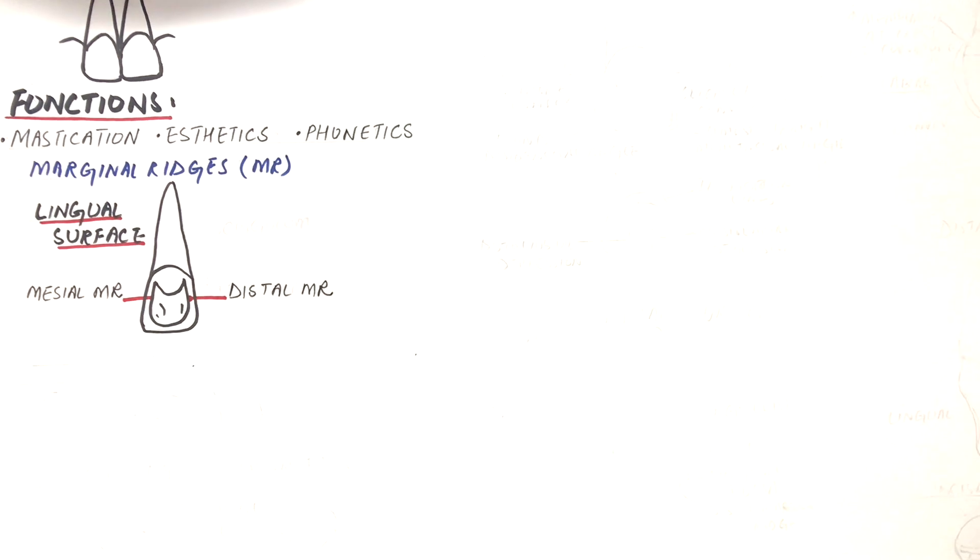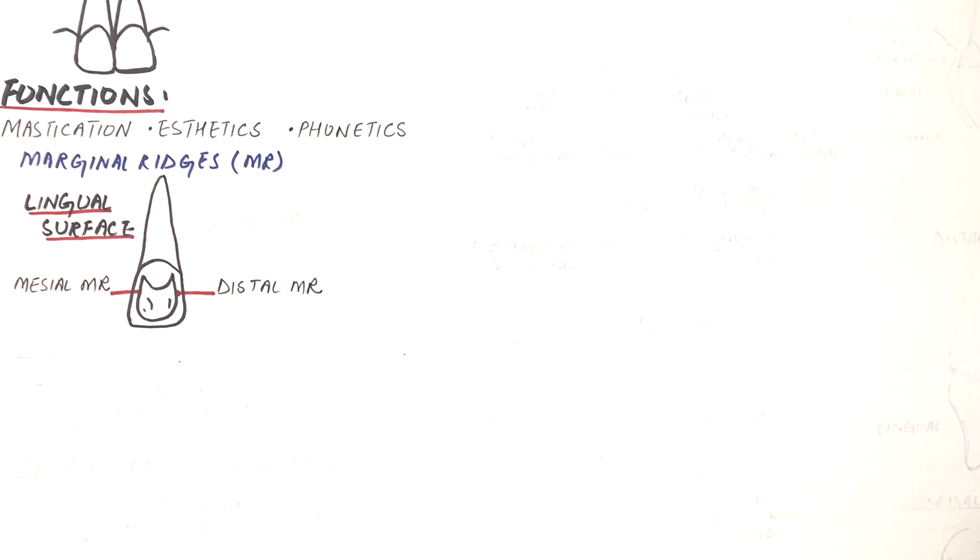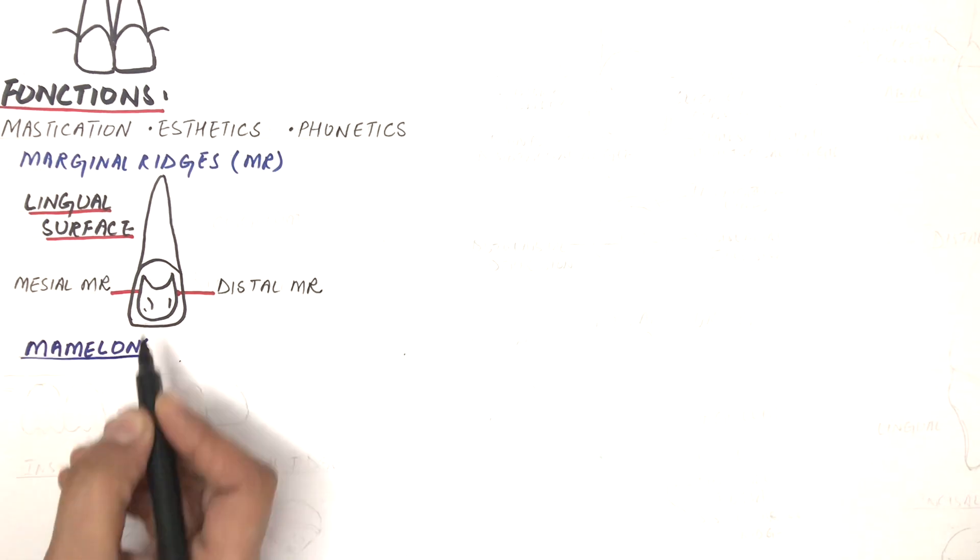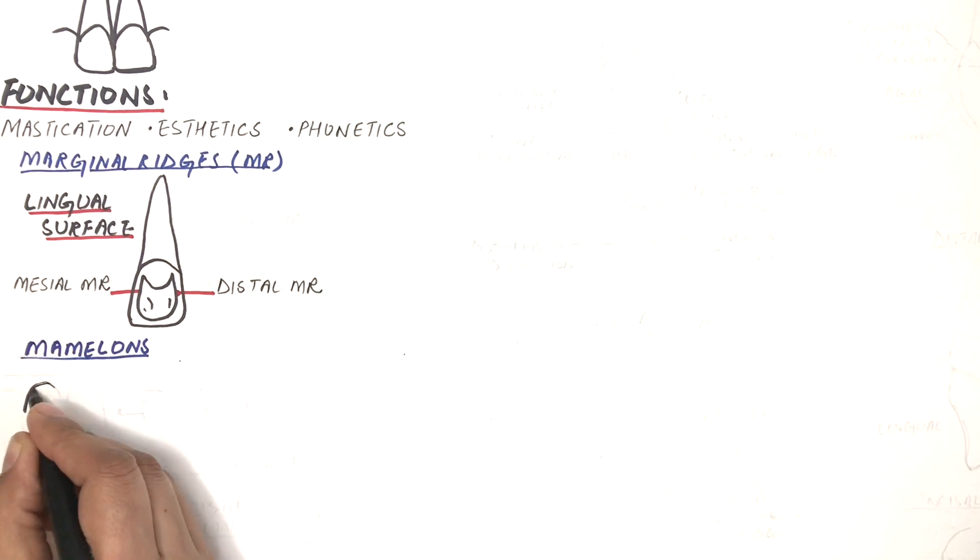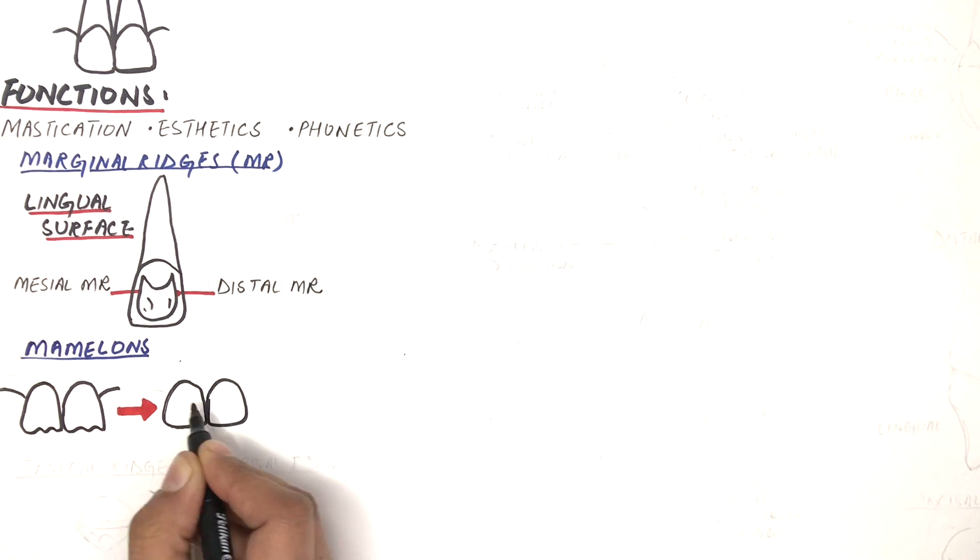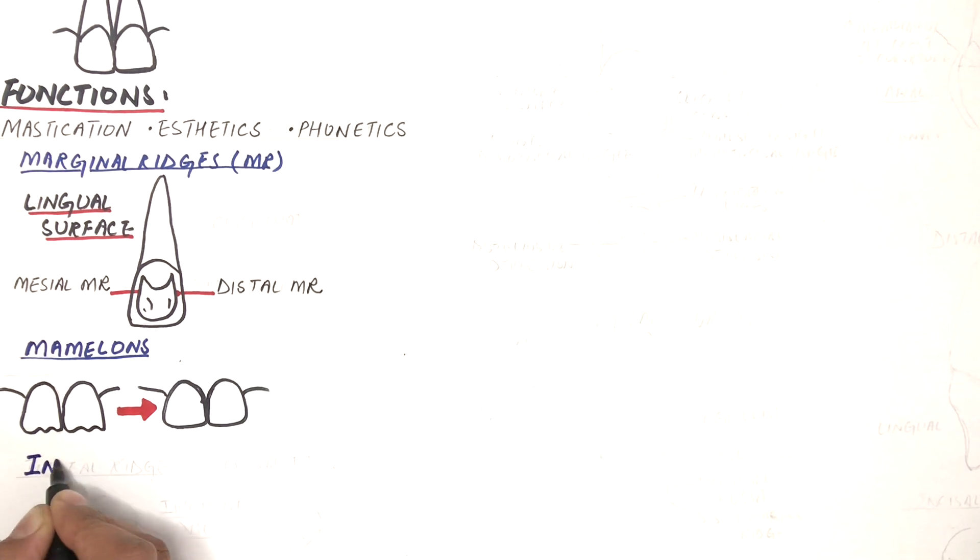Mamelons are rounded extensions of enamel on the incisal ridge of recently erupted incisors and most often are three in number. However, they are irregular in shape, number, and prominence. Mamelons normally wear away soon after the incisors come into active occlusion, causing the conversion of the incisal ridge into an incisal edge.